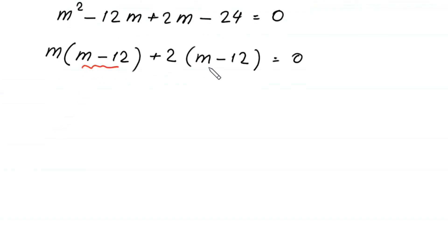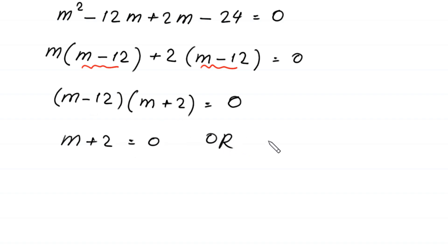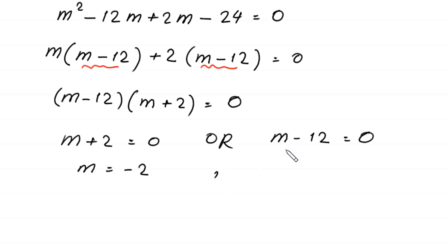The expression (m minus 12) is common, so we factor it out: (m minus 12)(m plus 2) equals 0. From this, m minus 12 equals 0 gives m equals 12, and m plus 2 equals 0 gives m equals negative 2.